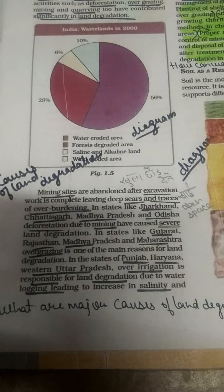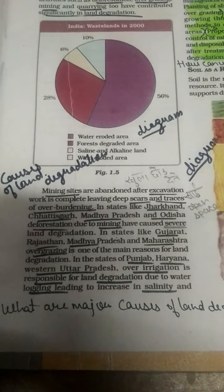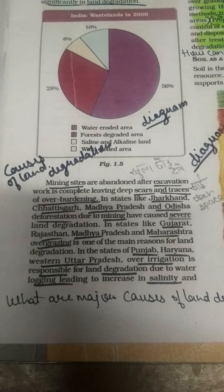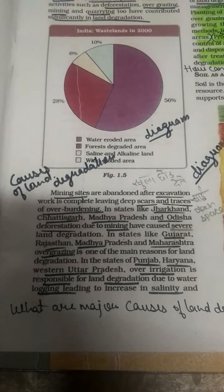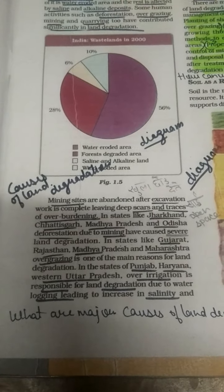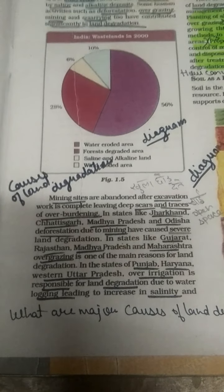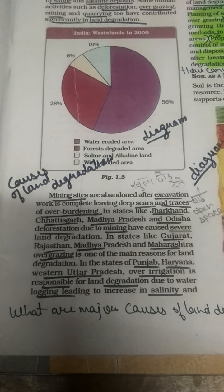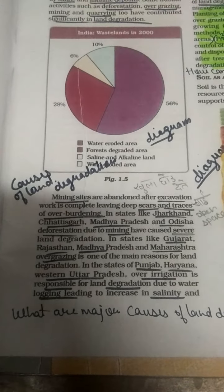Some states affected by mining-related land degradation include Jharkhand, Chhattisgarh, Madhya Pradesh, and Odisha. We know that we are getting so many minerals from these states. People are cutting down trees, doing mining to get the minerals, but they are not doing any kind of afforestation there. That is why these places are degraded due to mining.